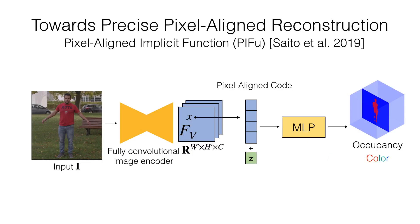To address a resolution limitation, last year we proposed a pixel-aligned implicit function, PyFu. I will briefly explain how it works and point out its limitation for the more precise human reconstruction, which is the main focus of this work.